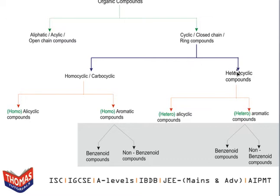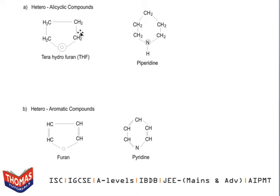Moving to the heterocyclic part — hetero-alicyclic and hetero-aromatic. In hetero-alicyclic compounds, there is one non-carbon atom in the ring and only single bonds. In hetero-aromatic compounds, there is also a non-carbon atom in the ring, but with at least one double bond present. You should know these names well because they commonly appear in MCQs.